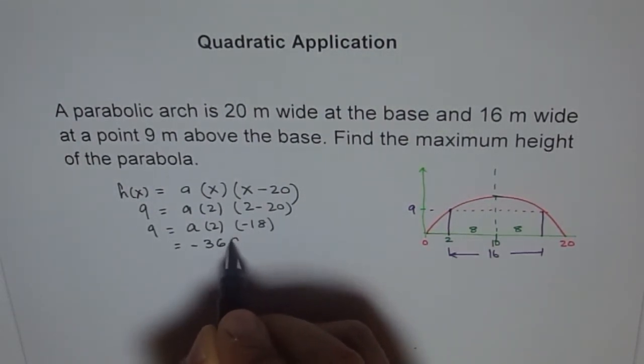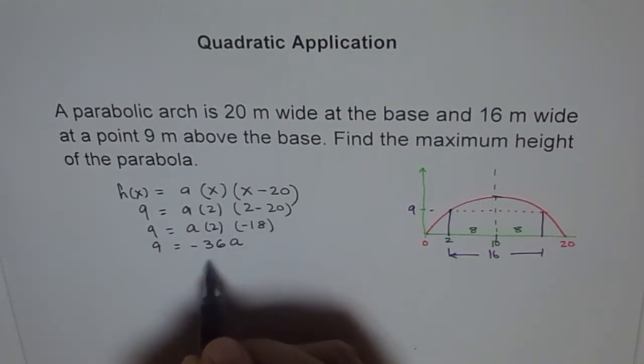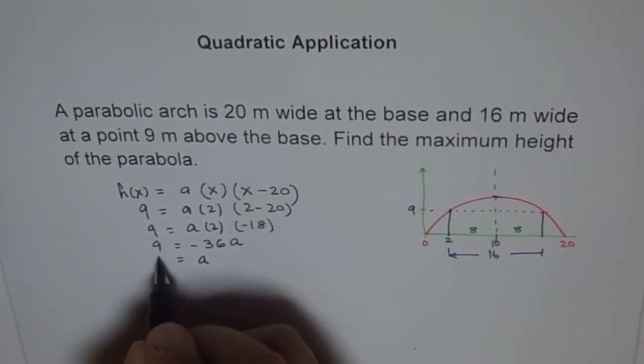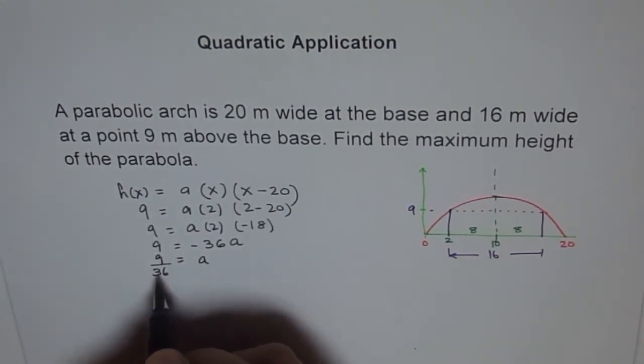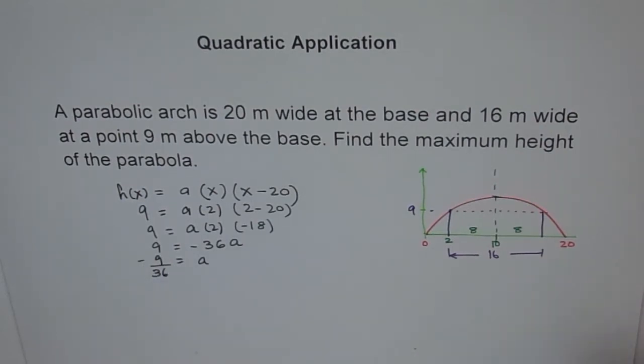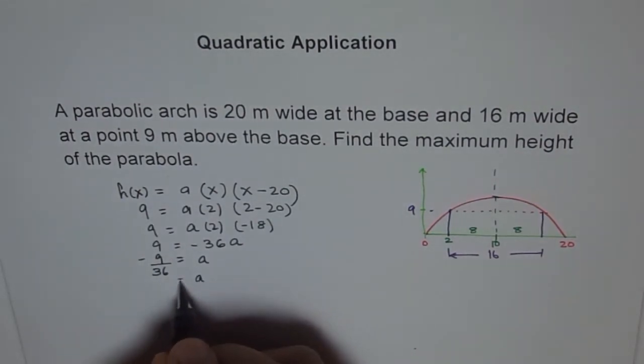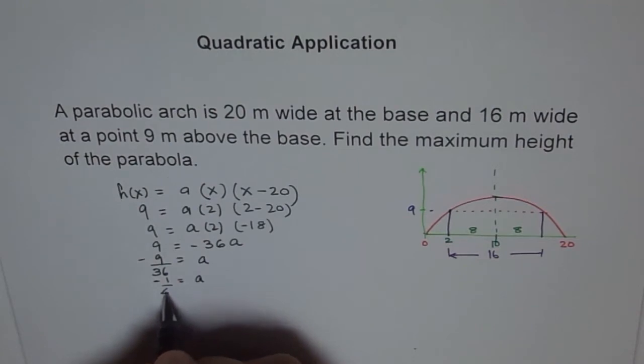Which gives us minus 36, right? 18 times 2. 36a equals 9. So a will be equals to 9 divided by 36 minus, which makes a equals minus 1 over 4. Perfect.